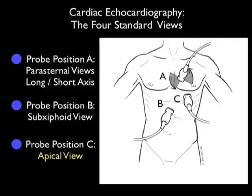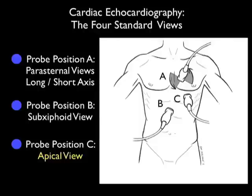I hope you've been able to join me prior for looking at probe position A, the parasternal views, and probe position B, the subxiphoid views of the heart. The apical view of the heart is an excellent view and gives a great deal of information about our patient's heart, as it shows all four chambers of the heart in relation to one another. Therefore, the apical view of the heart is preferred by cardiologists as it shows the synergy of all of the chambers of the heart to one another.